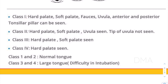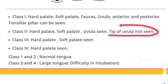In the case of class two, we are able to visualize the hard palate, soft palate, and even the uvula, but we are not able to visualize the anterior and posterior tonsillar pillars. That is the difference between class one and class two. You should also note that the tip of the uvula is not visible in class two.